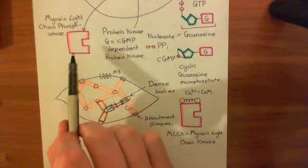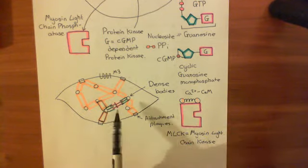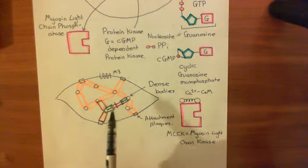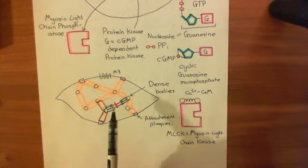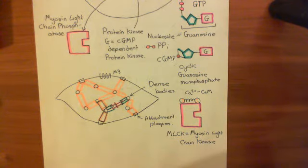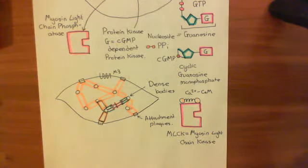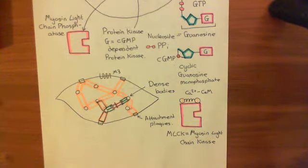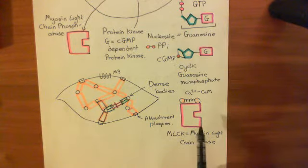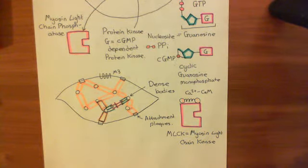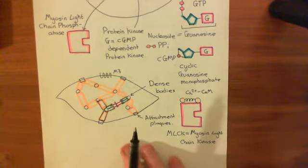Therefore, by activating myosin light chain phosphatase and inactivating myosin light chain kinase, the equilibrium tips toward fewer phosphorylated myosin heads, reducing cross-bridge cycling and reducing the contraction of the smooth muscle cell, thereby producing relaxation. That is how the endothelium-derived relaxation factor produces relaxation of the smooth muscle cells surrounding the endothelium of a blood vessel.